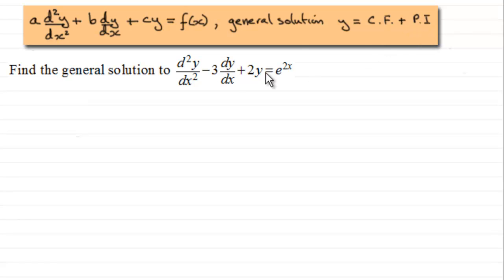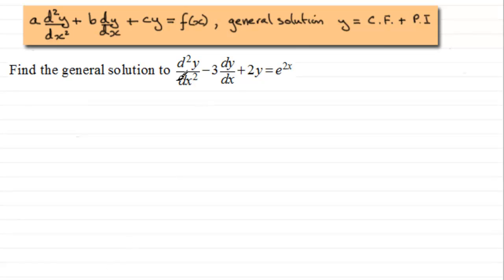I did an example in the past where we had our equation and it equaled an exponential function, but this is a special one and I want to show you why it's special. We've got to take care over the particular integral — it's not going to be like the ones we've done in the past. So let's start by working out our complementary function, in other words solving the equation where it equals zero.